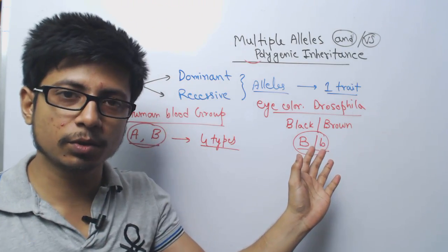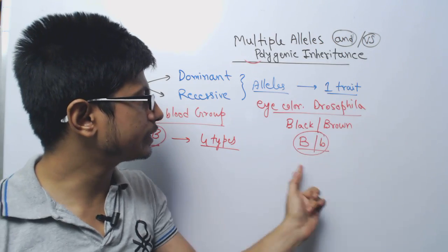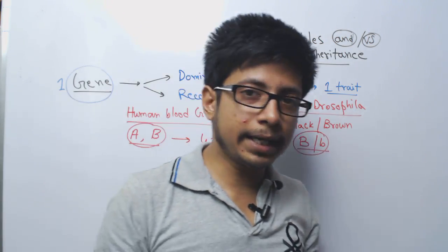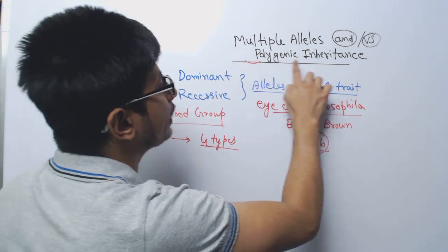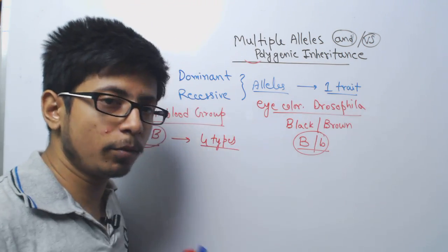It is a blend of multiple allele inheritance with co-dominance. That is why you see so many varieties. Otherwise, for multiple alleles which can be controlled by one gene, you see the eye color of Drosophila. On the other hand, if you talk about polygenic inheritance, this is far more complex.